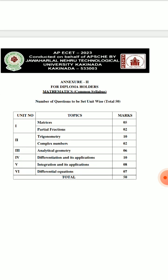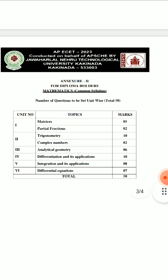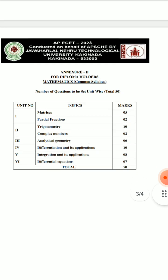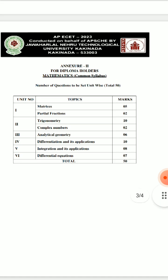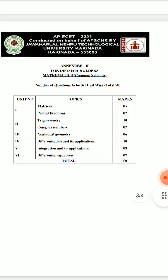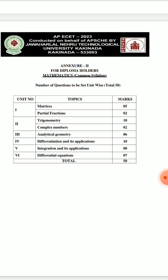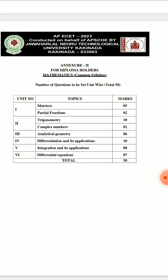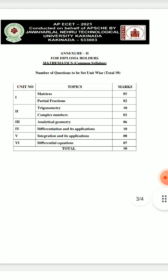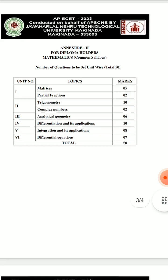Differentiation and its applications — there must be a maximum of one question. From that one question, sometimes you have to align with other questions. For integration, mean and RMS can be used — definite integration and its application, indefinite integration, that part of RMS and mean is a bit. In differential equations there are 7 marks — most of the types involve finding the particular integral or complex general solution. There are also a few points on degree and order finding. So the total weight is 50 marks.